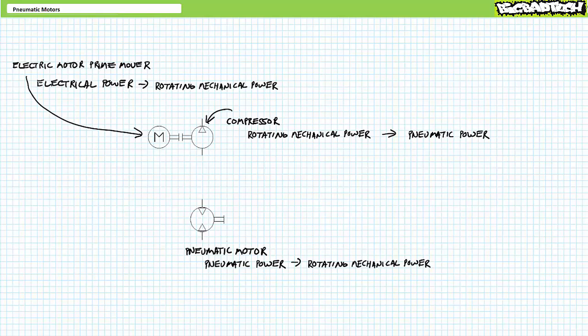Air motors are a great fit for flammable atmospheres or clean environments that might not be suitable for electric motors or dirty hydraulic motors. Additionally, air motors can stall at no risk of overheating or damage, as would a continually energized electrical motor in a locked rotor condition. Air motors can be found in numerous applications including industrial saws, drills, and grinders, and pneumatically powered handheld tools. Just remember to put your hearing protection on when you use them.